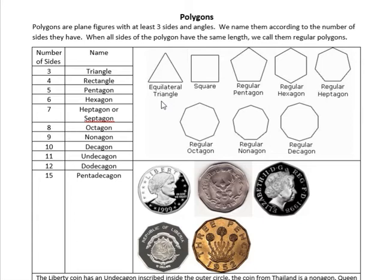When all sides of a polygon have the same length, we call them regular polygons. All of these polygons that I pictured here are regular, meaning they all have the same length for all their sides. So a triangle has three sides, and if all three sides are equal, that's called an equilateral triangle.